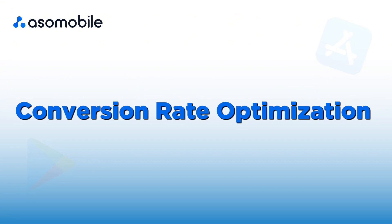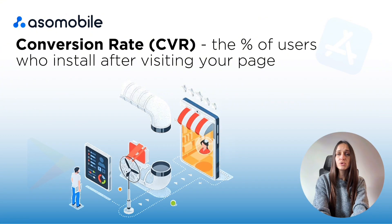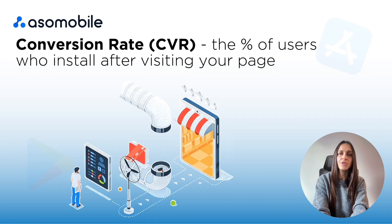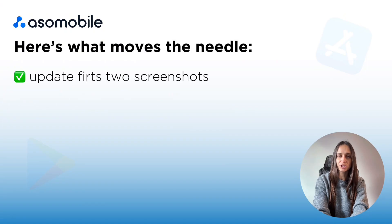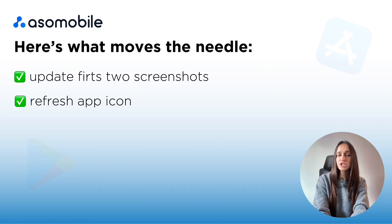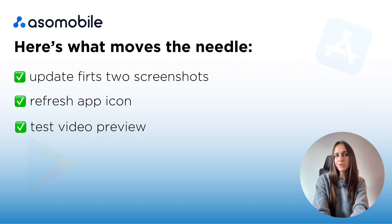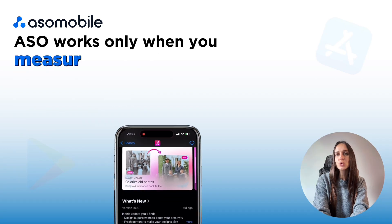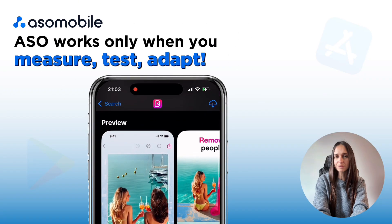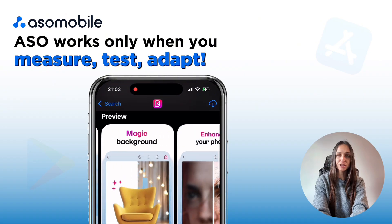Conversion rate optimization: your CVR — the percentage of users who install after visiting your page — is the heart of ASO. Even a small increase in CVR can bring hundreds or thousands of extra installs without spending more. Here's what often makes the biggest difference: updating the first two screenshots, which drive most clicks; refreshing your app icon's color, contrast, or style; testing video previews — shorter, faster, more emotional; tweaking text to match users' intent; and doing seasonal updates for holidays and events. ASO works only when you measure, test, and adapt. Being flexible, fast, and experimental is a real advantage in 2025.